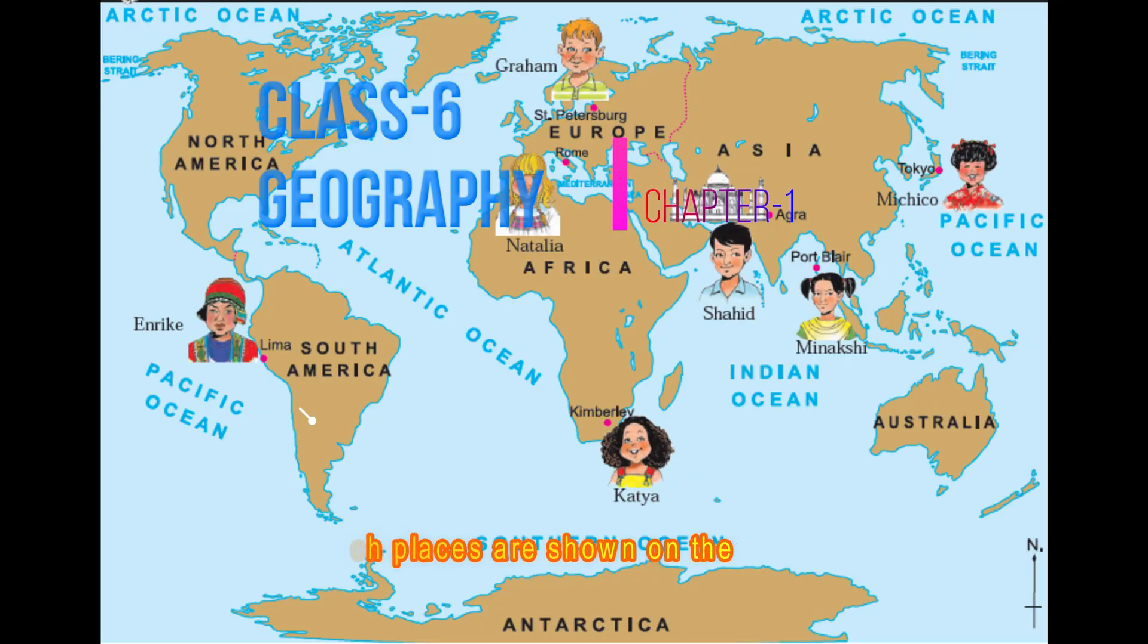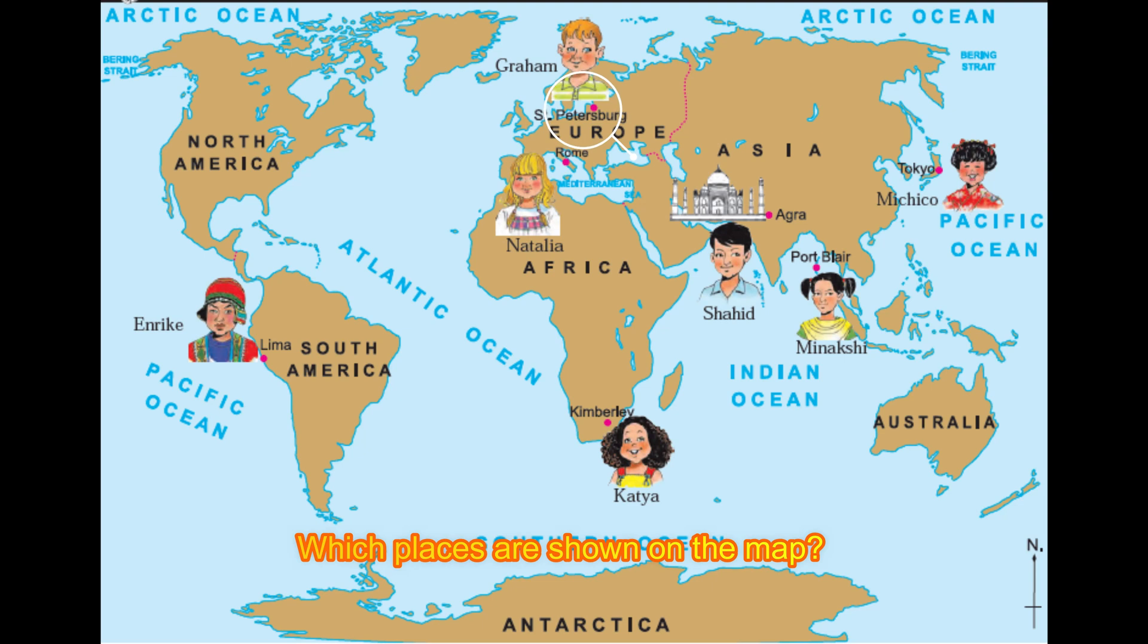We can see Lima, St. Petersburg, Rome, Kimberley, Agra, Port Blair, and Tokyo on this map.